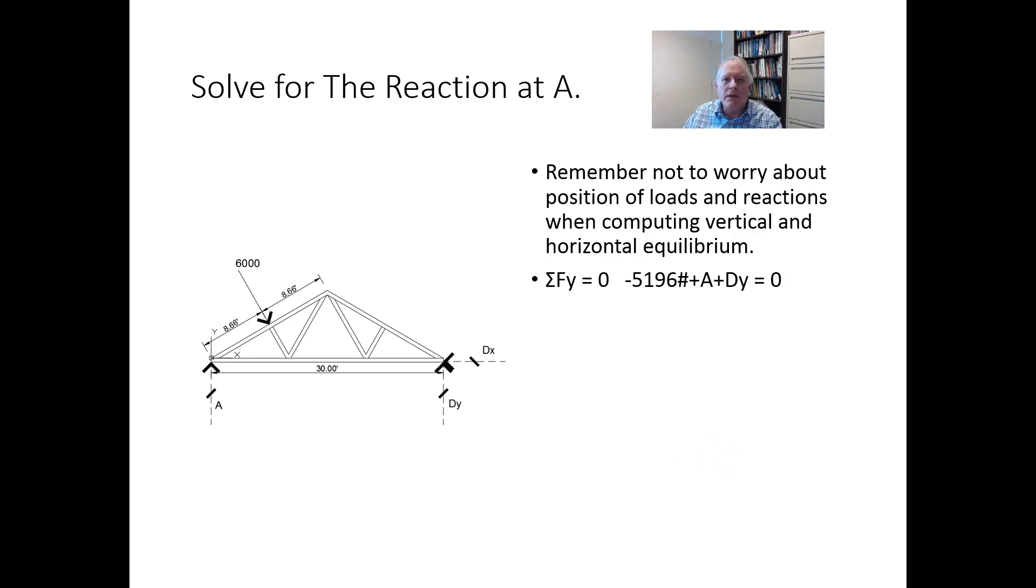So sum of the forces in the vertical direction equals zero. So negative 5,196 pounds, which is the downward load at B, plus the unknown reaction at A, plus Dy equals zero. Now, it's important here, even though we're not solving for Dy, that you include it in the equation because a vertical equilibrium equation has to include all of the vertical components, known or unknown.